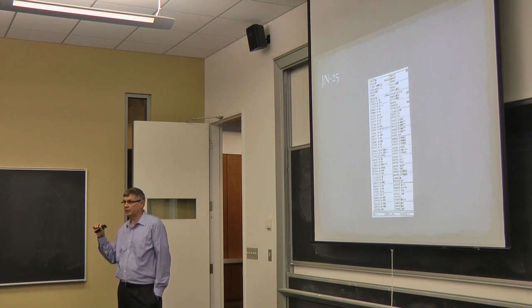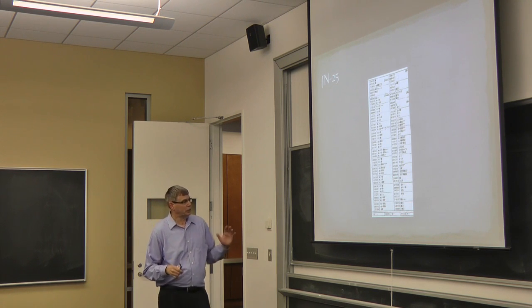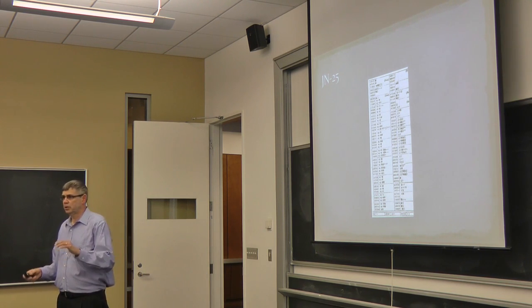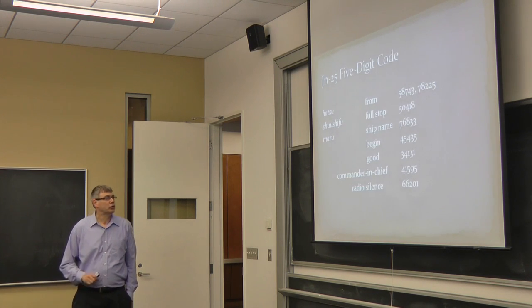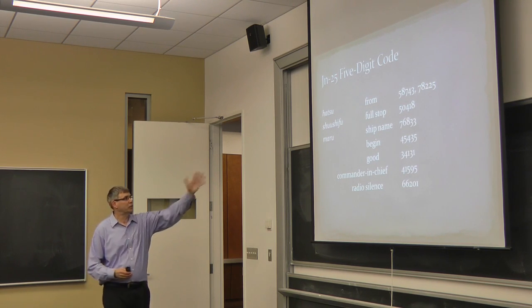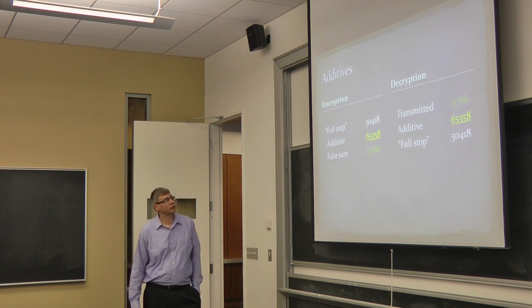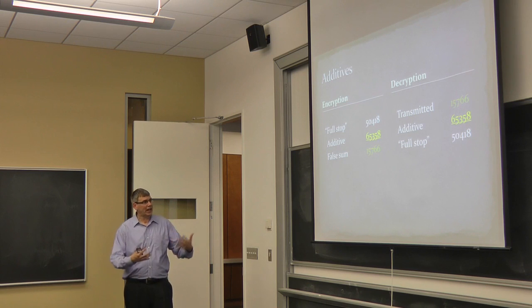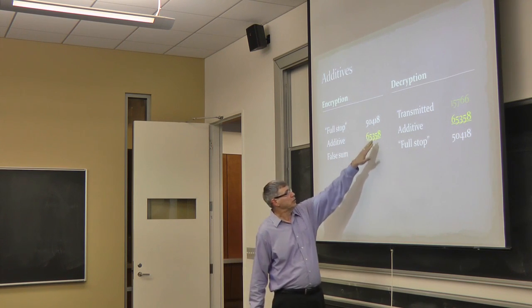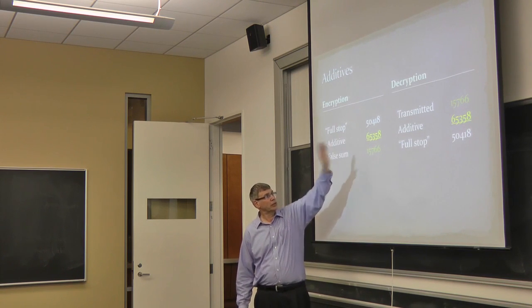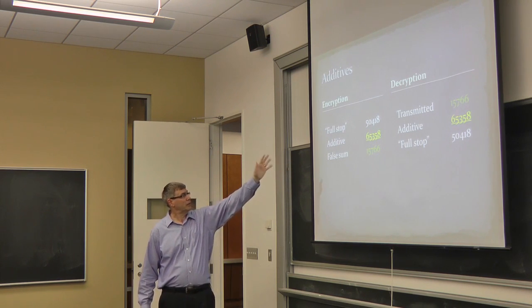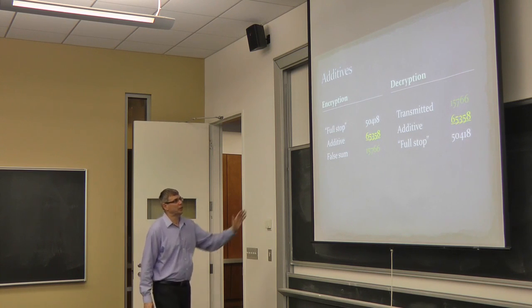JN-25 was the primary one. We also mentioned JN-11. Now, JN-25 was based upon a five-digit code. Common Japanese words and phrases were replaced by five-digit numbers. Codes are typically broken by linguists, people who understand the structure and patterns of languages. To make the code more secure, the Japanese overlaid it with random additives. So, for example, a code group like full stop 50418 would have an additive overlaid on it. And the overlaying was done by a false sum. 8 plus 8 was 6. You did no carrying. So, essentially, you're adding vertically mod 10. So, you get 6, 6, 7, 5, and 5 plus 6 is 1, not 11. And what was transmitted then would be the false sum.